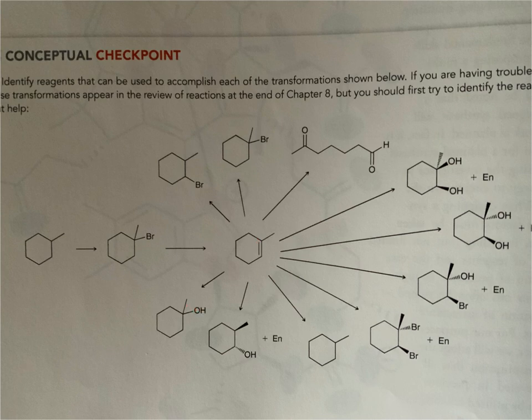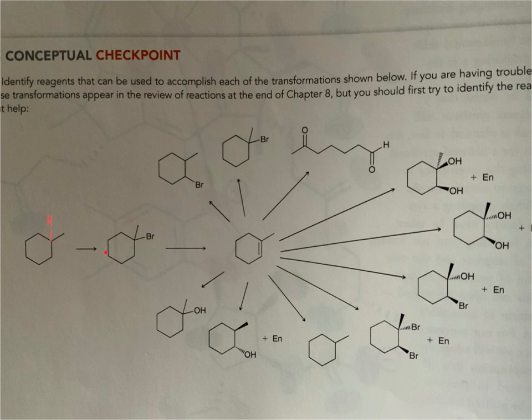Let's start off with the synthesis of that central compound, starting from methylcyclohexene. In the first transformation, I'm going to draw this hydrogen in. What's happening is this tertiary hydrogen is being substituted for bromine. So when we recall from 255 chemistry, this would be a radical substitution — a radical C-H substitution.